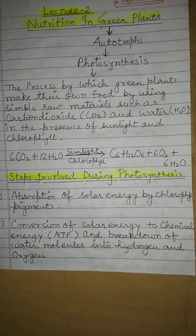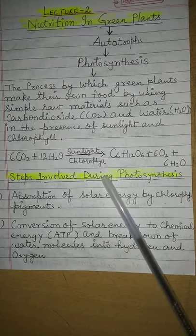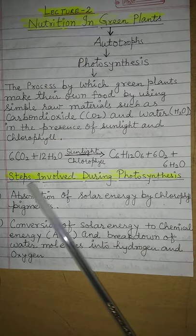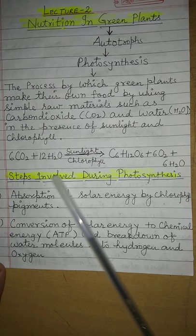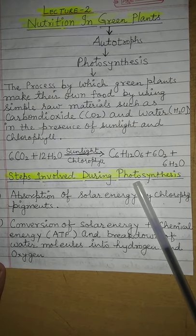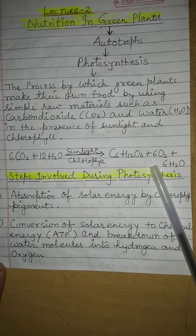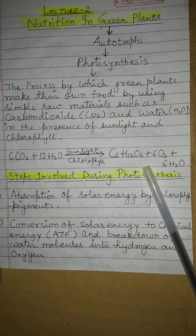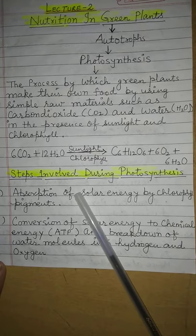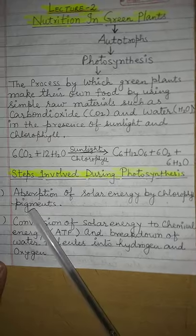Now we will discuss what are the steps involved during photosynthesis — the steps that make this entire process proceed and complete. There are three basic steps involved during photosynthesis.